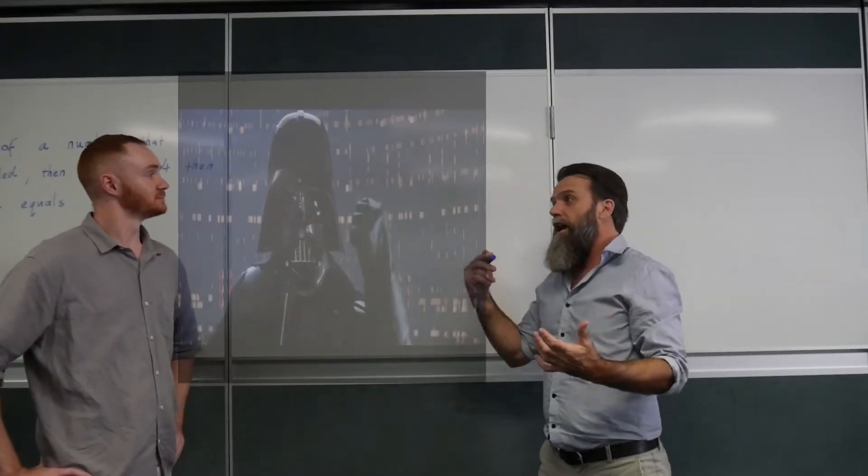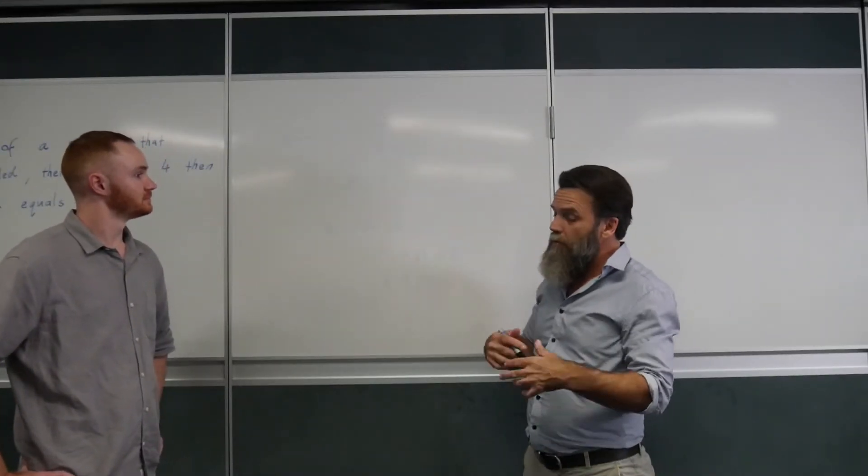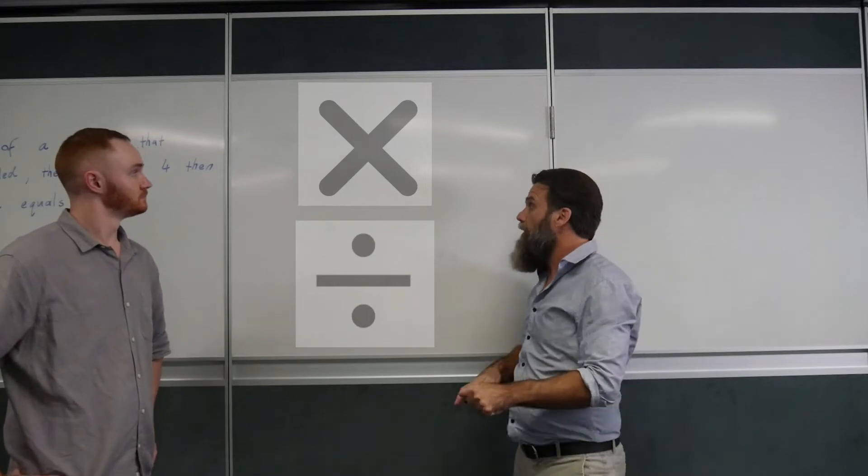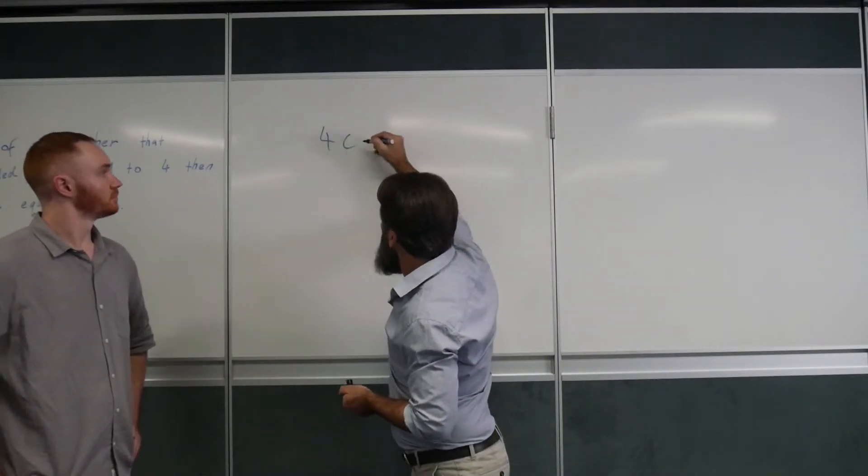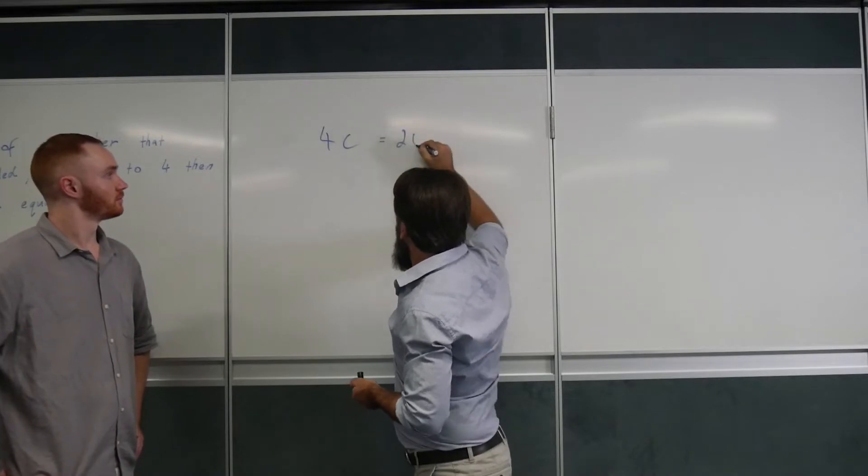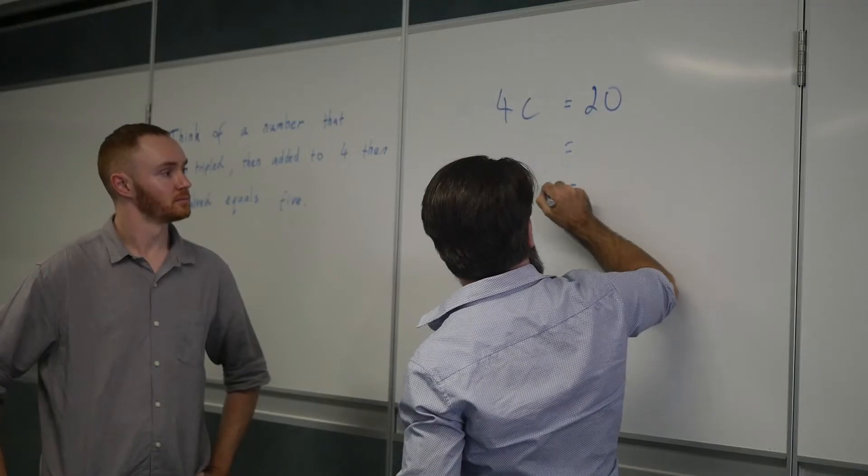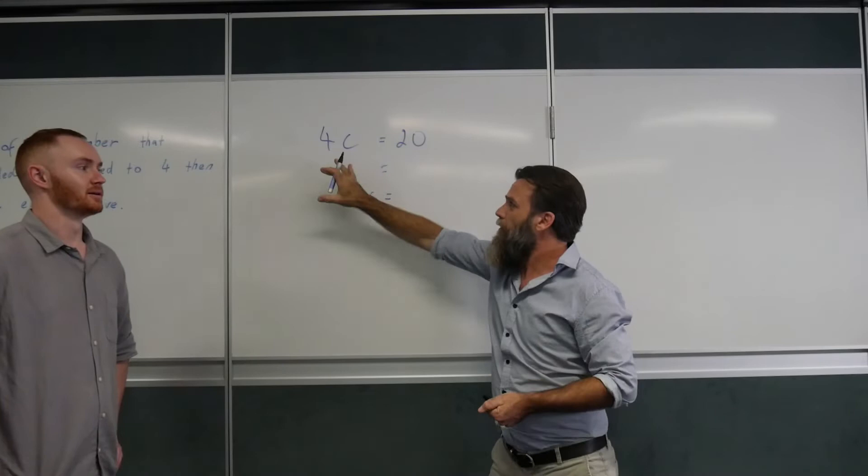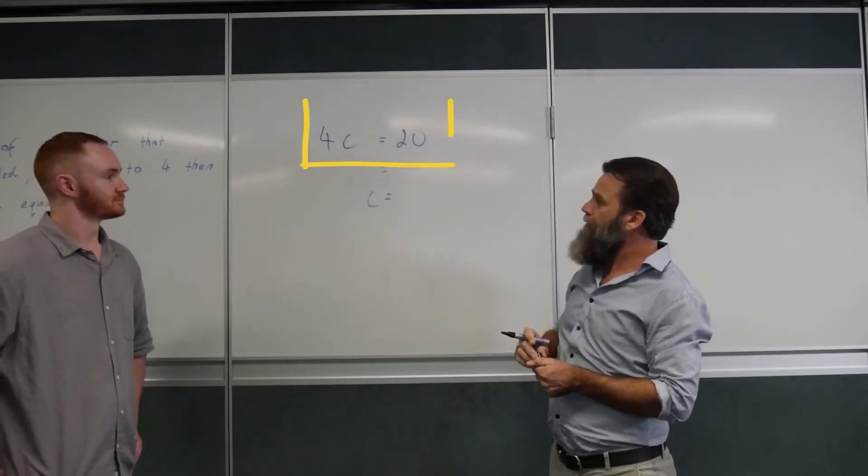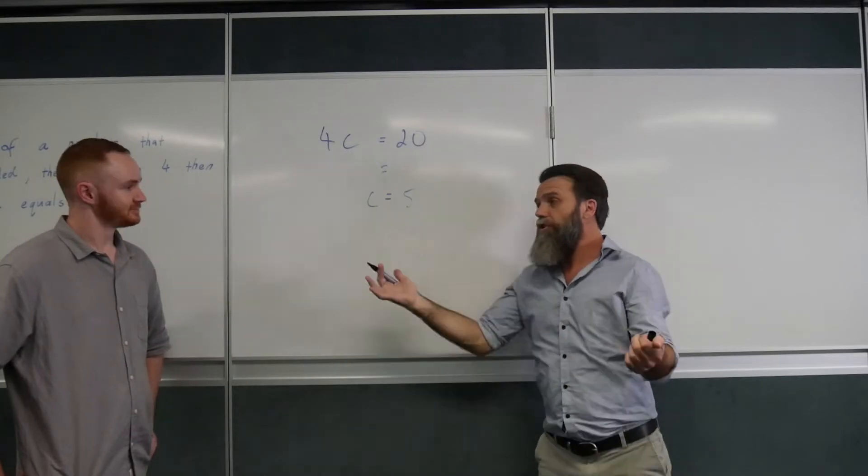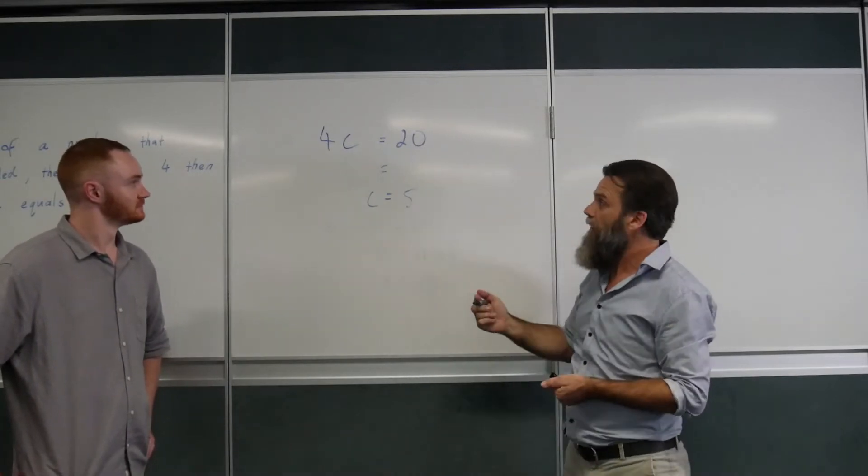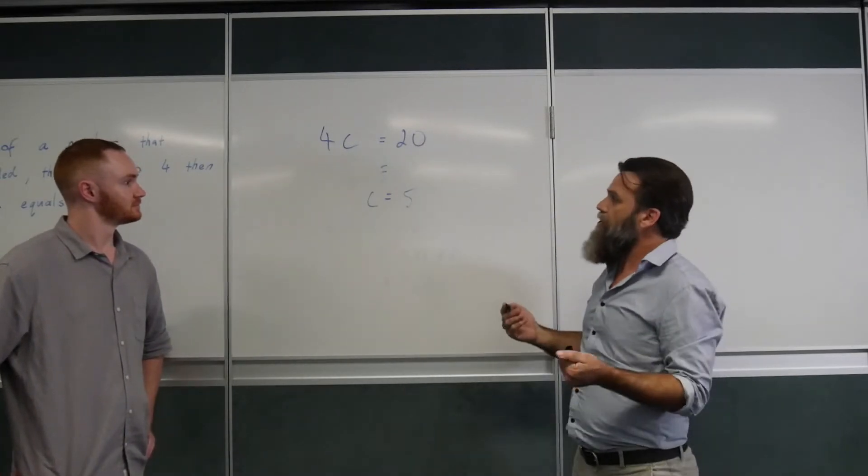The power of algebra actually extends beyond just adding and subtracting. We can also do multiply and divide as well. So, an example would be, if I'm thinking of a number that when I multiply by 4, the answer is 20. What do you think that number is? So, 4 times what gives me 20? Well, it's got to be 5. It does. So, straight away again, congratulations, you can already do one step equations in algebra.